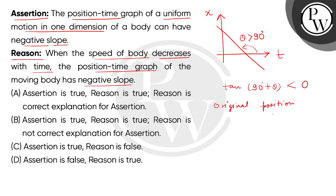So children, we can say that the assertion is definitely true. Now when we look at the reason, it states that the speed of the particle is decreasing. What does decreasing speed mean? It means retardation. But retardation does not necessarily indicate that the slope of the position-time graph will be negative. So the reason is false, and the correct answer is option C.